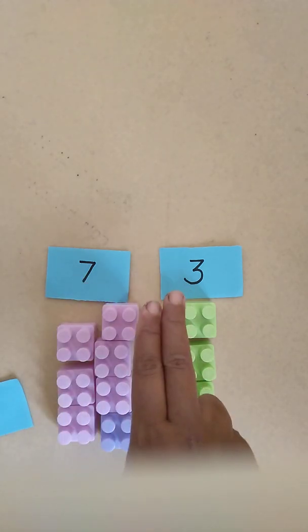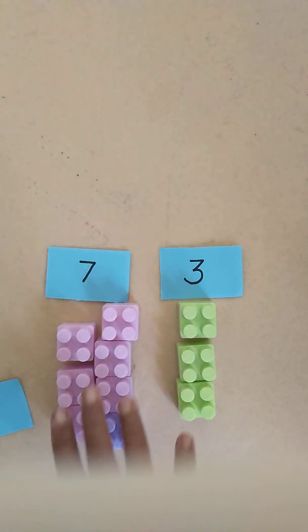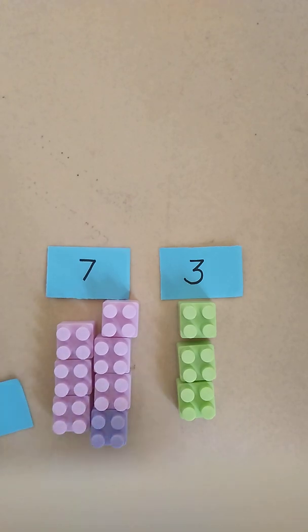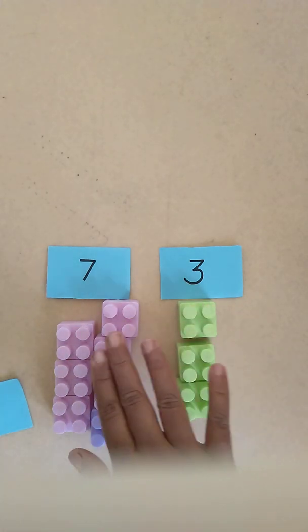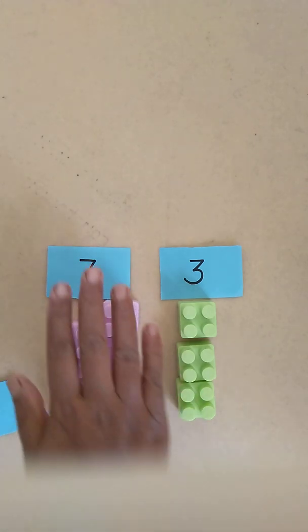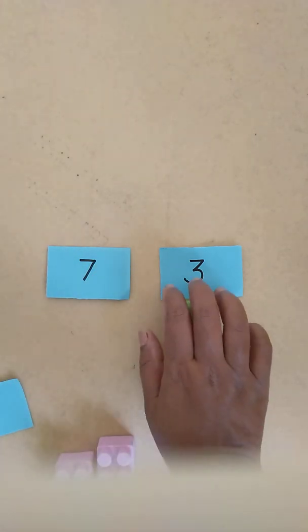See, now it's very easy for the child to relate the numbers. Now it sits in his mind that 7 means there will be many, and 3 will be lesser than 7. So now if you ask the child which is bigger, 7 or 3, it is going to be 7.